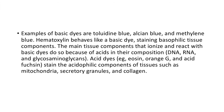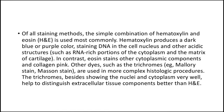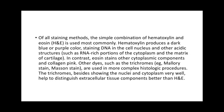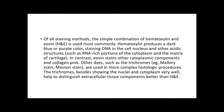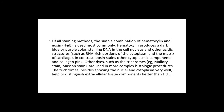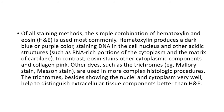Of all staining methods, the simple combination of hematoxylin and eosin (H&E) is used most commonly. Hematoxylin produces a dark blue or purple color, staining DNA in the cell nucleus and other acidic structures such as RNA in ribosomes of the cytoplasm and the matrix of cartilage. In contrast, eosin stains other cytoplasmic components and collagen pink. Other dyes such as trichrome stains — for example, the Mallory stain and the Masson stain — are used in more complex histologic procedures.